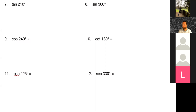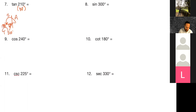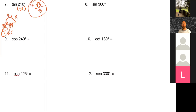Tangent of 210°: reference angle is 30°, because 180 + 30 = 210. We're in quadrant three, where tangent is positive. The tangent of 30° is √3/3. Remember, anytime a 30-60-90 triangle is involved, you'll have √3 in there — whether it's √3/2, √3/3, or just √3 — depending on whether it's sine, cosine, or tangent and the specific angle. The only way to memorize these is with repetition.